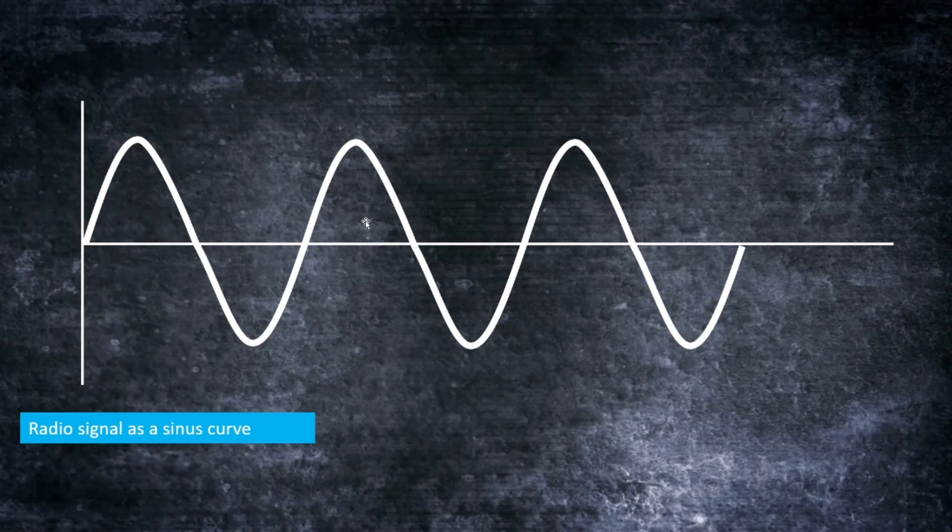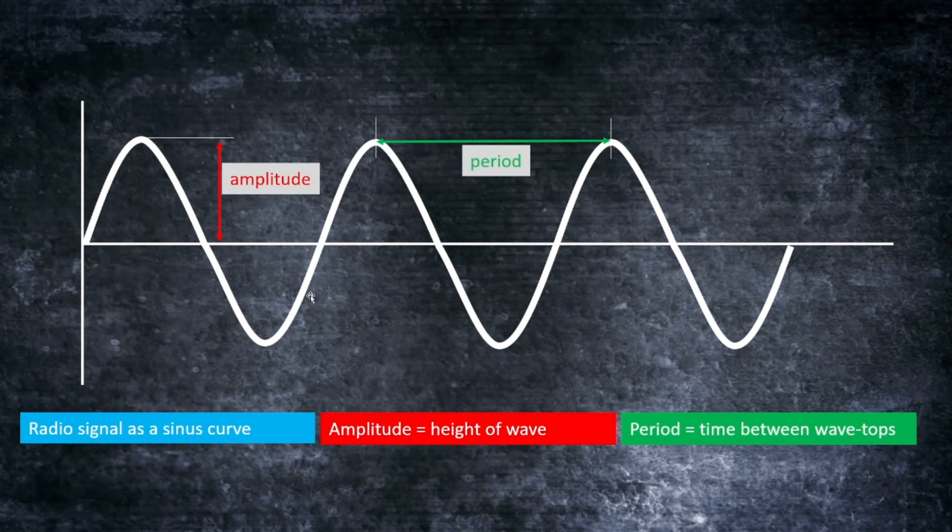So in order to convey data, a signal needs to change, and you can do this in several ways. The most basic is to turn the signal on or off, or you could have longer or shorter signals such as Morse code. But this means that if you want to understand the signal, you need to know the way the signal is constructed, and this is what we call modulation.